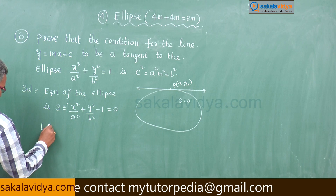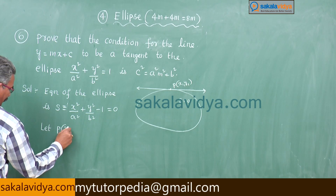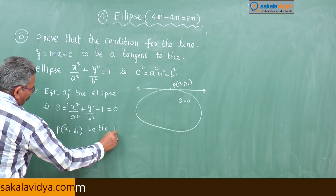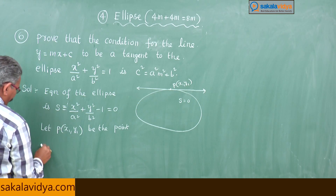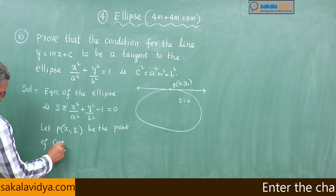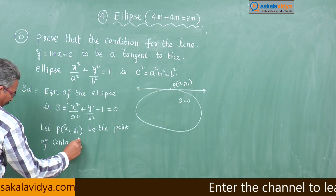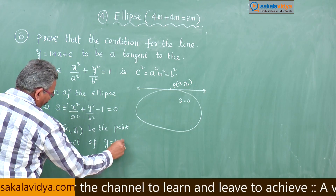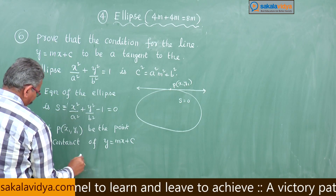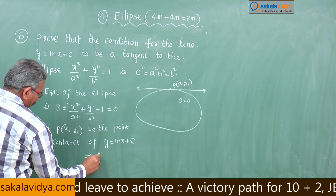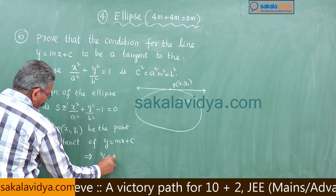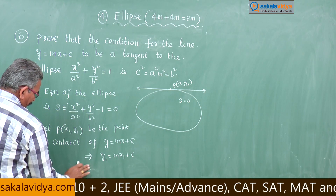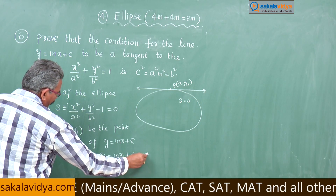Let P(x₁, y₁) be the point of contact of y = mx + c. That implies it lies on the line, so y₁ = mx₁ + c — call this equation 1.